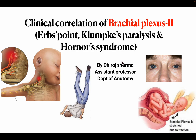Today's topic is about clinical correlation of brachial plexus. In the previous topic we mentioned how to draw the brachial plexus. In this topic we'll see about what is Erb's point, what is Klumpke's paralysis, and what is Horner's syndrome, along with winging of scapula.